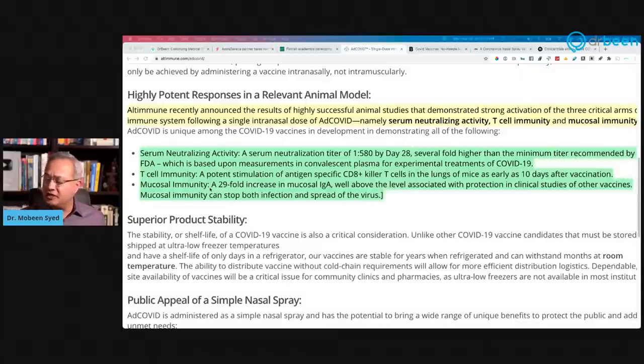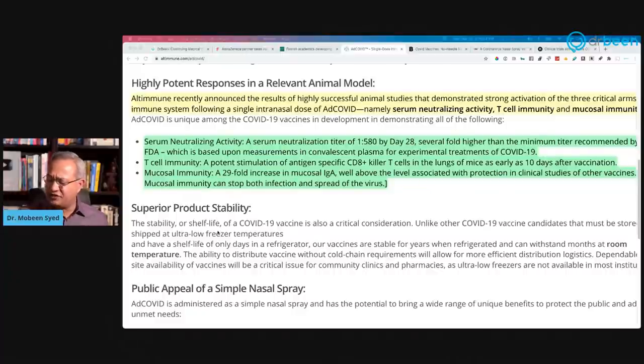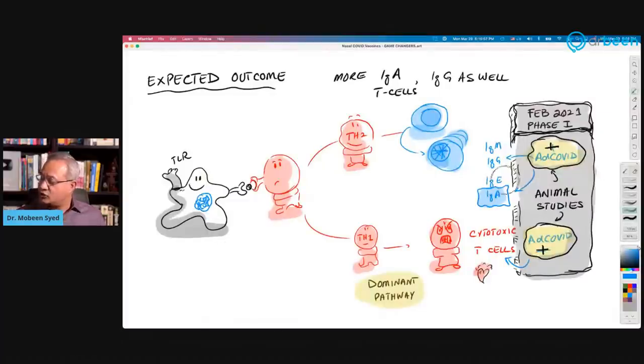And then mucosal immunity. Mucosal immunity will mean IgA. A 29 fold increase in mucosal IgA well above the level associated with protection in clinical studies of other vaccines. Mucosal immunity can stop both infection and spread of the virus. It can protect from incoming infection and outgoing infection as well. Beautiful mechanism. And then they say, we are superior product stability. We don't need those freezing and frigid temperatures.